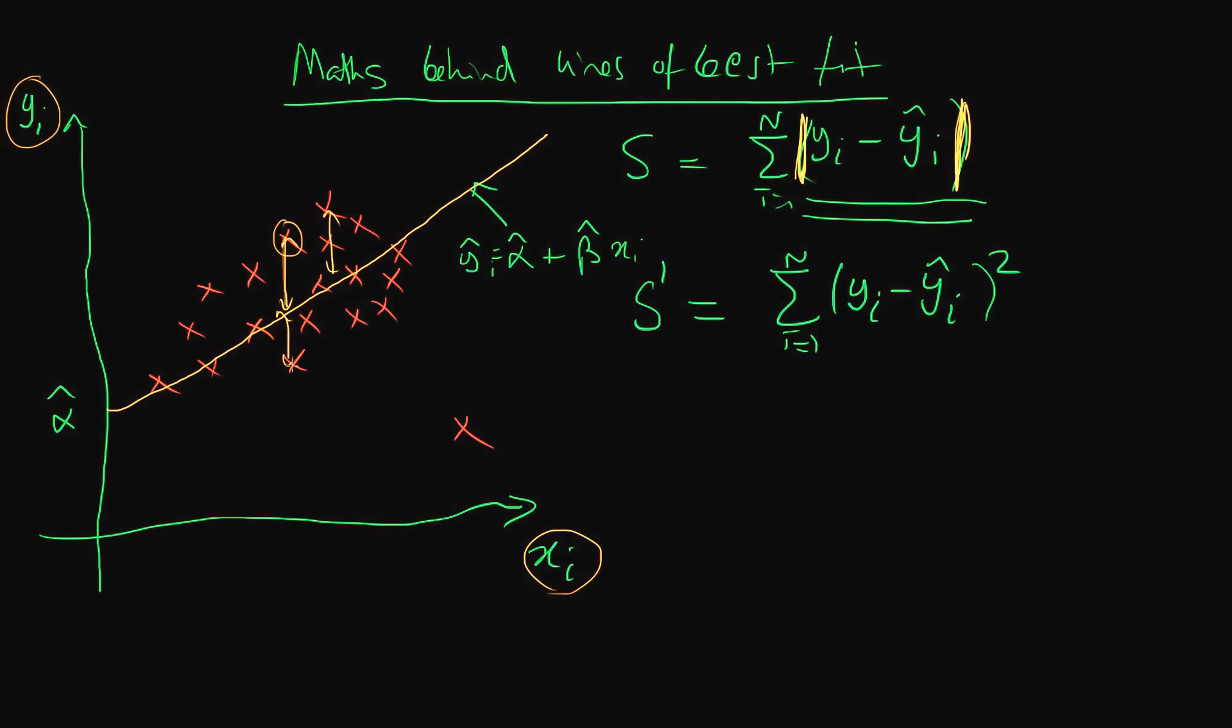By squaring that, I've made the points which lie below the line—I've made that distance positive—so I care just as much about over predicting as I do about under predicting.